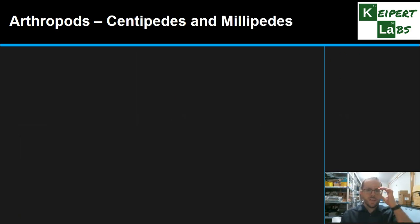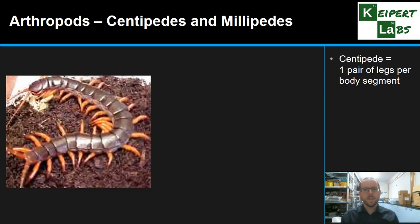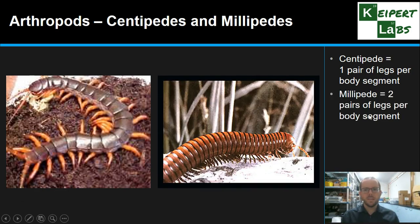The last two sections we're looking at together are centipedes and millipedes. The name suggests centipedes have 100 legs, but they don't actually — they can have a lot less or a lot more. They're defined as having one pair of legs for every segment of their body. Millipedes, which don't have a thousand legs, have two pairs of legs for every body segment. That's how we would tell them apart.